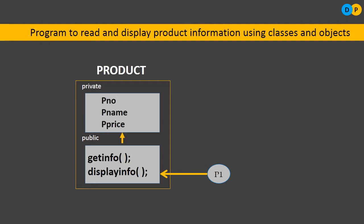Let me first explain the program via a picture. I have considered the class by the name product. Product is having data members and member functions. The different data members are product number, product name, and product price. All of them are kept in private access specifier. Similarly, get info and display info are member functions. They are kept in the access specifier public.